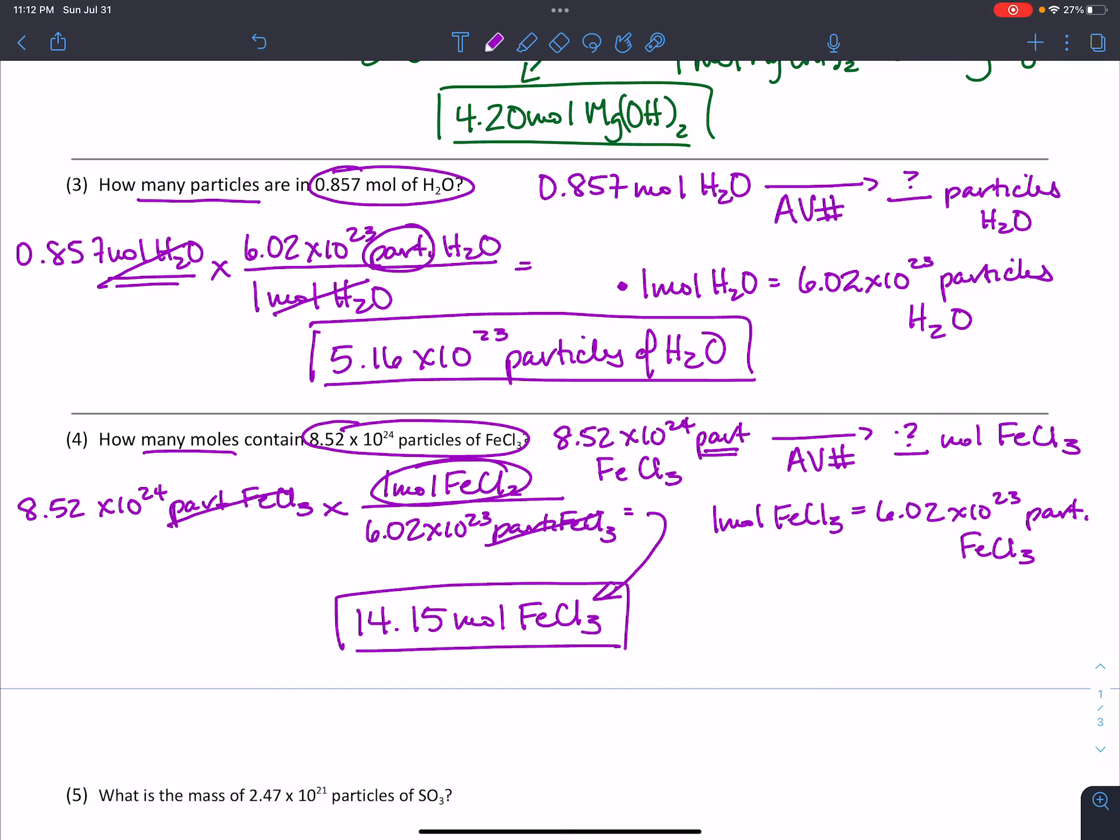So those are just two examples of how you convert back and forth between moles and particles and particles and moles. The next video is going to look at what happens if we start with grams and need to go all the way to particles or what if we start with particles and we need to go all the way to grams.